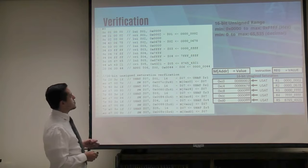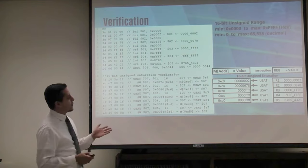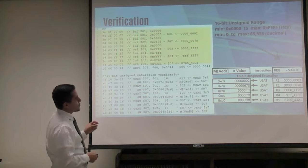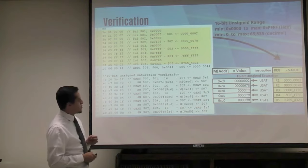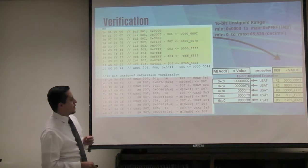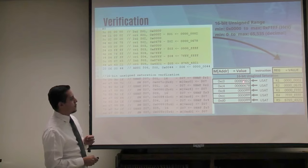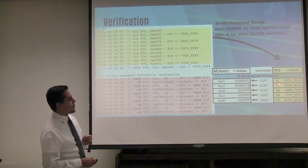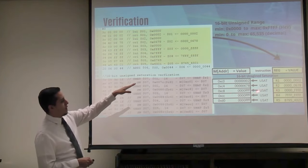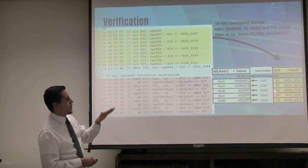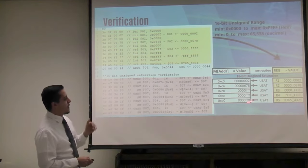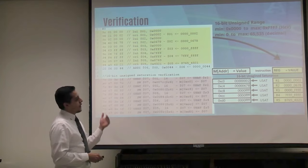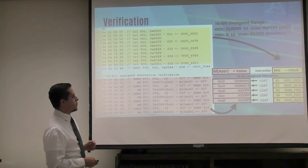For 16-bit unsigned saturation, bigger range. We load our registers with data. Register 1 is within the range and gets passed, as well as register 2. Register 3 is at our max value, so it doesn't saturate — we test whether we pass the value. Those are the values going into those memory locations.